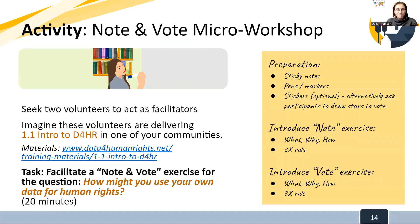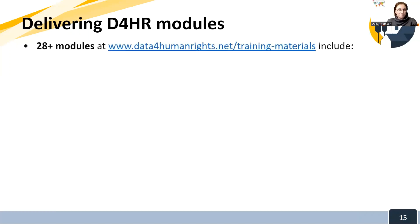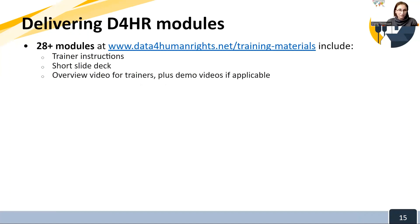After you've done this activity, the last bit is a review of how to use all of the lessons learned in this module for delivering other Data for Human Rights modules. There are over 28 modules available at the dataforhumanrights.net website in the training materials section. This includes trainer instructions, a short slide deck, an overview video for trainers, any applicable demo videos, and a two-page handout in three languages.